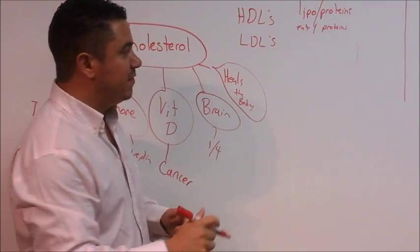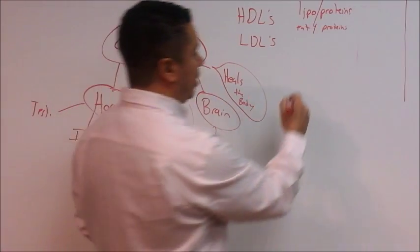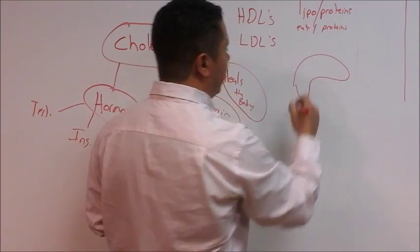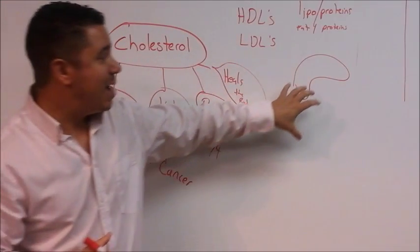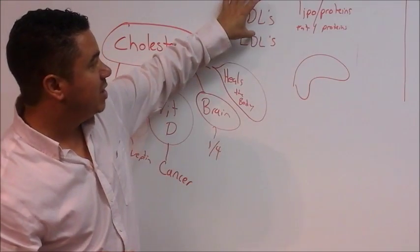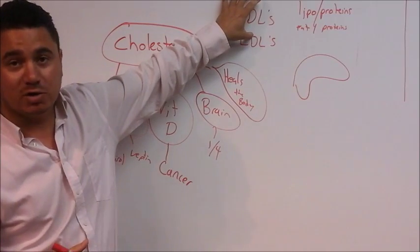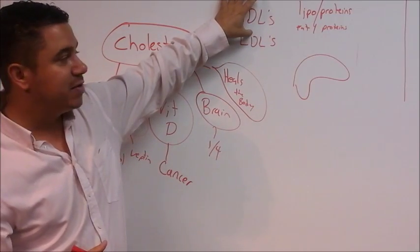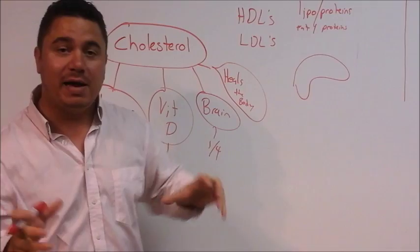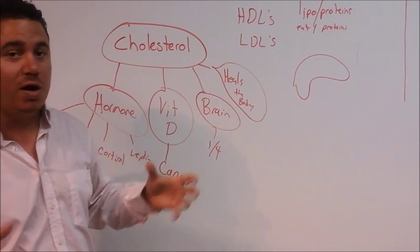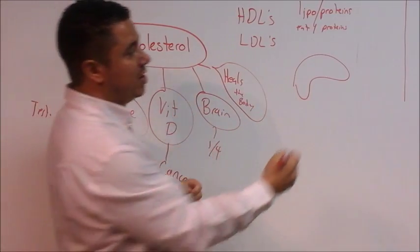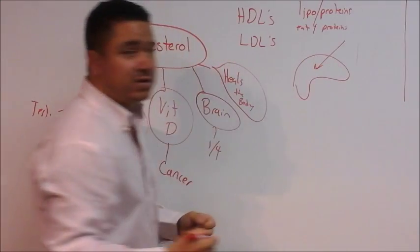They actually ship the cholesterol throughout the body. So you have your liver which is like the factory. Let me draw that up here. That's your liver. Okay, what happens is you have these HDLs. Why they're called good cholesterol is because what these trucks do, they're little trucks that drive around the body and they look for excess cholesterol and they bring it back to the liver for packaging.